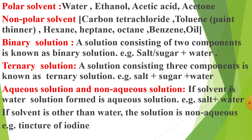Now, two more terms you have to know which come in chemistry many times: aqueous solution and non-aqueous solution. Aqueous means water; non-aqueous means a solvent other than water. If the solvent is water, the solution formed is an aqueous solution — common example: salt plus water. If the solvent is other than water, the solution is known as non-aqueous solution. The common example is tincture of iodine, which is a type of antiseptic — here, iodine dissolves in alcohol to form tincture of iodine, so alcohol is the solvent and it is an example of non-aqueous solution.